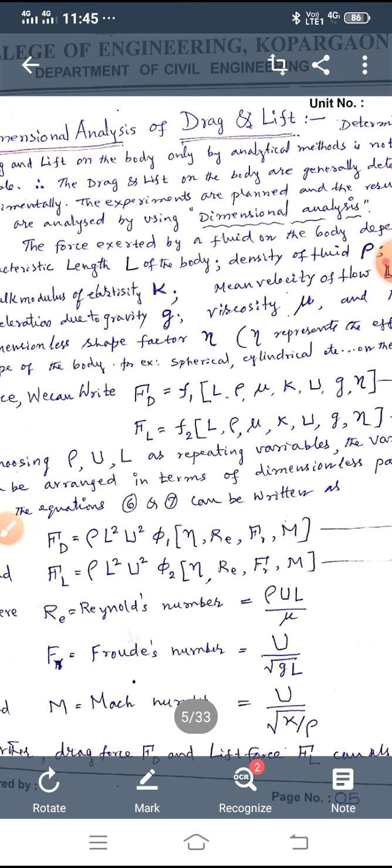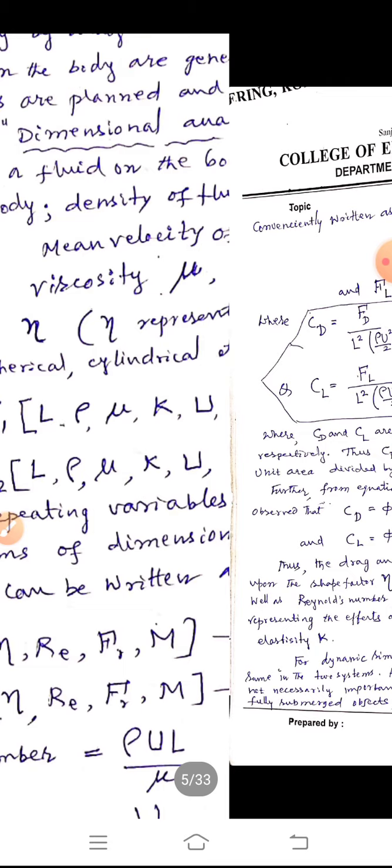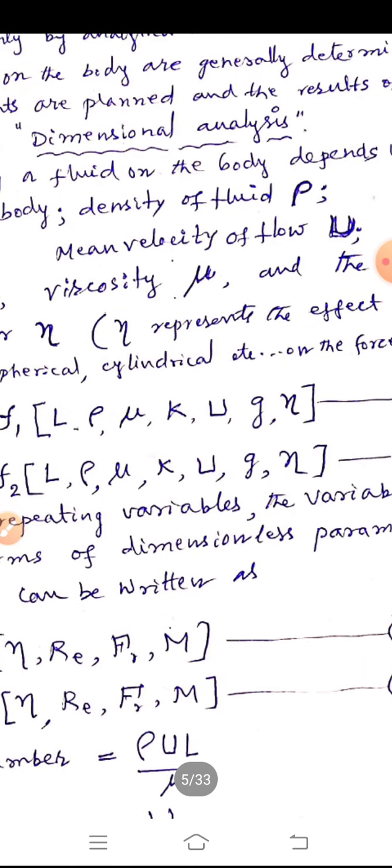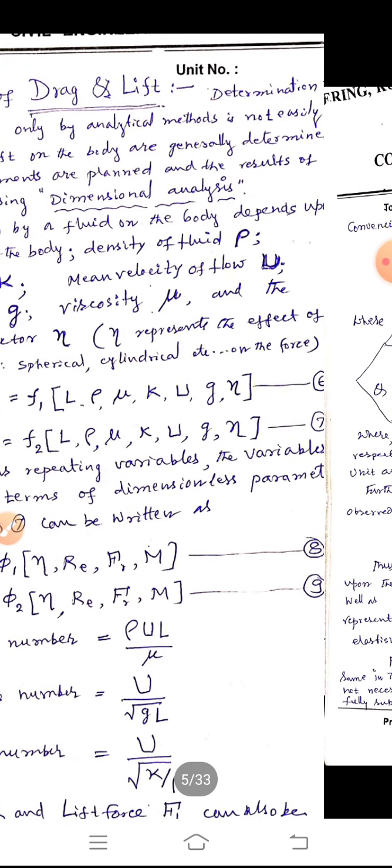Now, dimensional analysis of drag and lift. The force exerted by a fluid on a body is depending upon the characteristic length L of the body, mass density ρ, viscosity μ, bulk modulus of elasticity K, and uniform velocity of fluid flow U, acceleration due to gravity G and dimensionless parameter shape factor that is denoted by η. Therefore, FD and FL are the functions of these parameters and can be written as shown here. Here, FD is a function of L, ρ, μ, K, U, G, and η, similarly FL.